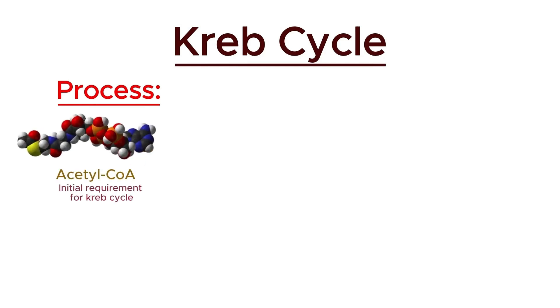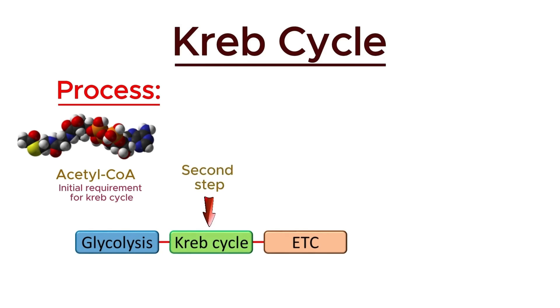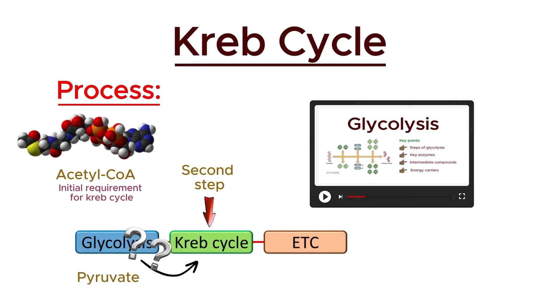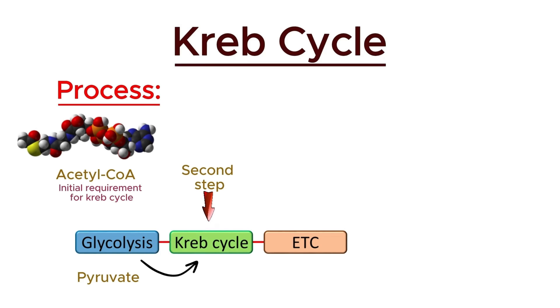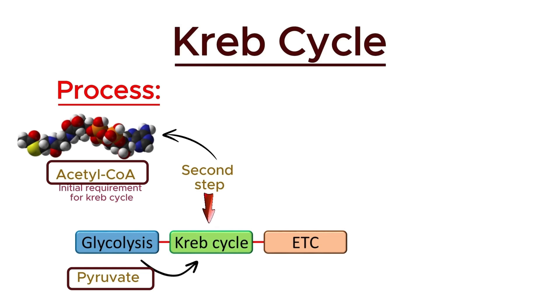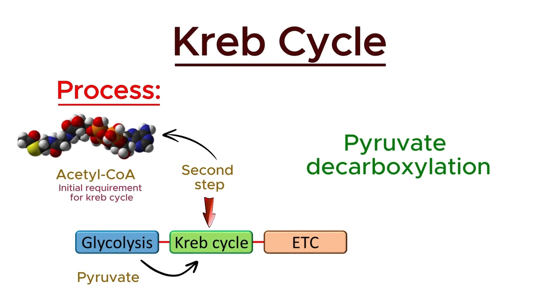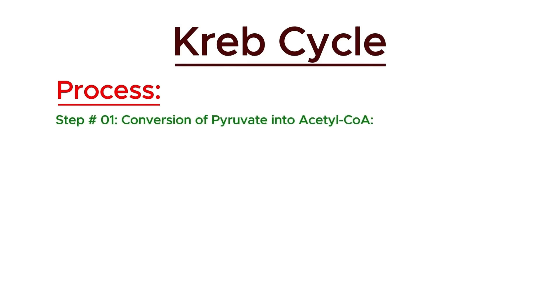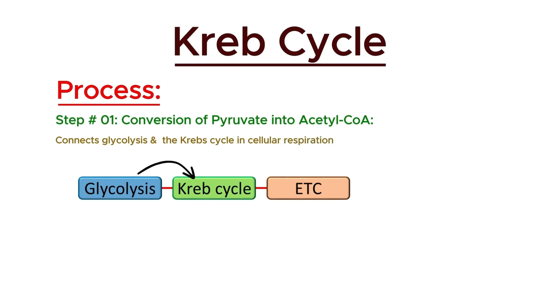Let's discuss the steps of the Krebs cycle. To start the process, we require acetyl-CoA. The Krebs cycle is the second step of cellular respiration, so the end product of the first step should enter into the second step. The end product of glycolysis is pyruvate. This pyruvate has undergone some transformation — a reaction called pyruvate decarboxylation — so the first step is the conversion of pyruvate into acetyl-CoA. Pyruvate decarboxylation is a crucial biochemical reaction that connects glycolysis and the Krebs cycle. This process converts pyruvate, the end product of glycolysis, into acetyl-CoA, which then enters the Krebs cycle.